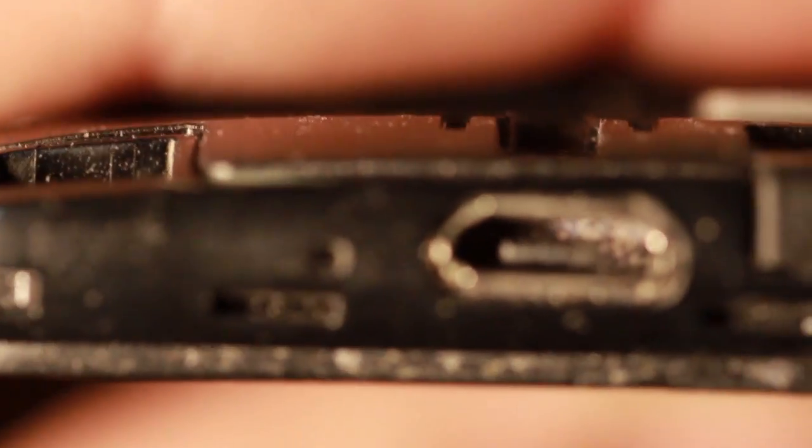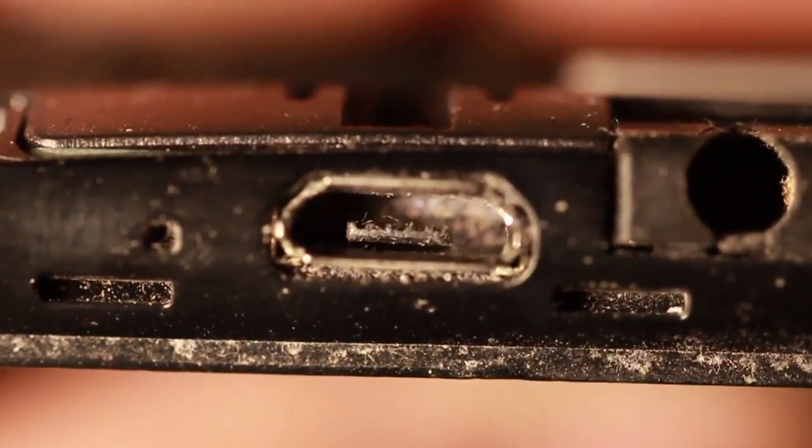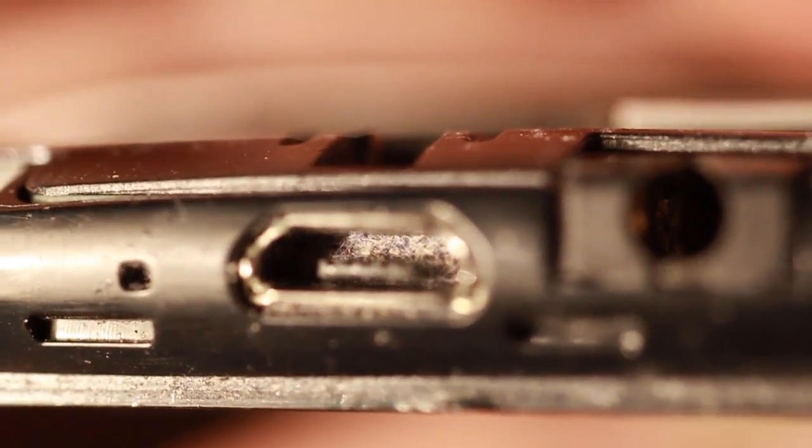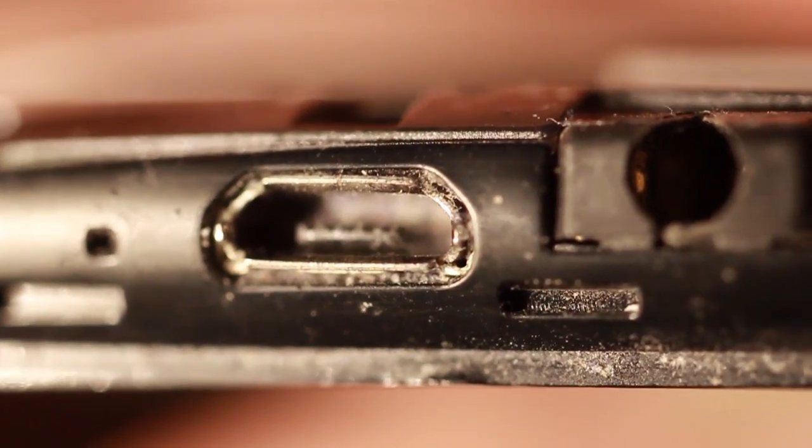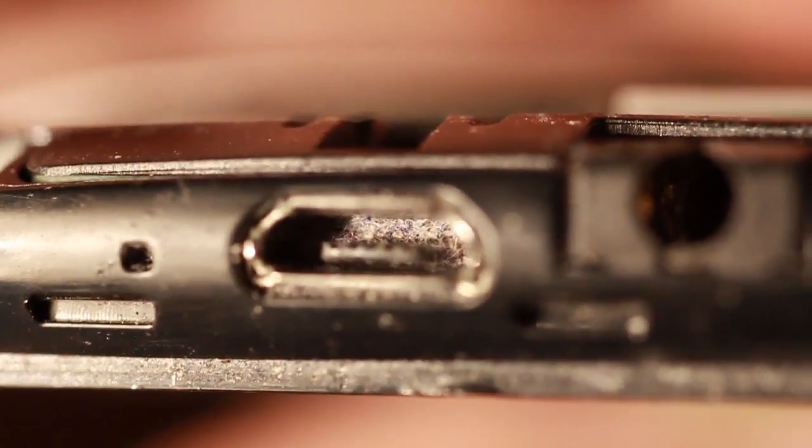Alright, so let's focus this in. Into super macro mode. So I've already removed the back. And now you can see that lint in there. I'll just angle that a bit. So the back of the phone, all around the edge there. And then right inside is this lint that builds up.